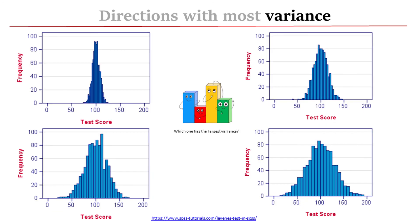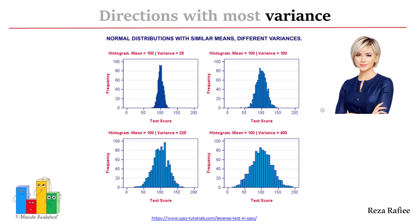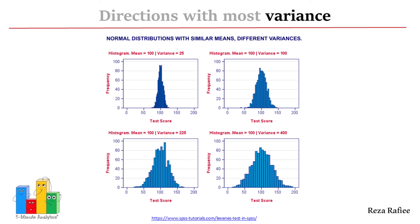Here are four examples of normal distributions with similar means and different variances. A larger variance means that, on average, the data values are further away from their mean. As you can see, the histograms become wider as the variances increase.